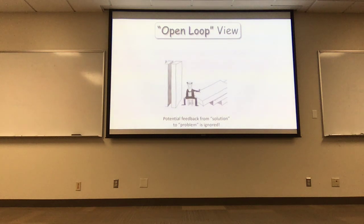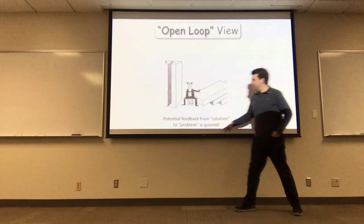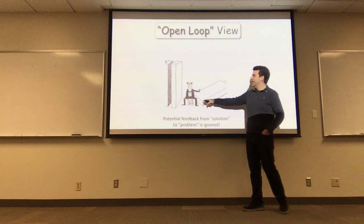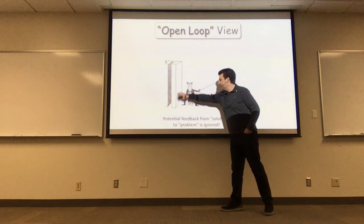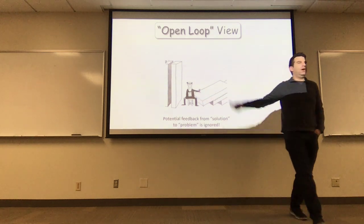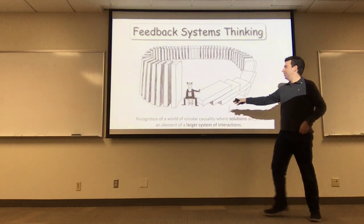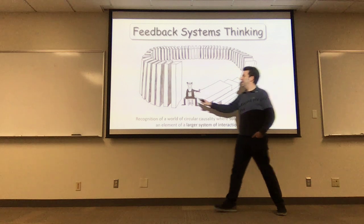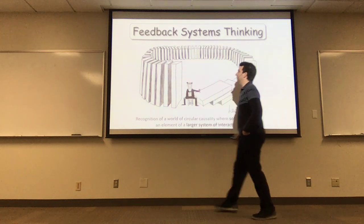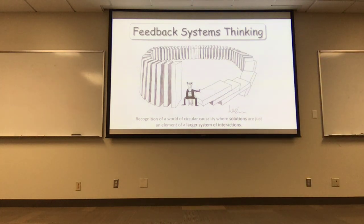The open-loop view is that the potential feedback from solution to problem is ignored. This cartoon depicts: if you've got this wall next to you, you can push down that wall thinking you've solved your problem, not realizing that behind the scenes you've set a process in motion that will end up doing exactly the opposite of what you want. You thought you were opening up space for yourself, but your demise might be coming due to your particular actions. So that's what we're trying to expand — to think of models where this feedback-oriented perspective might be useful.